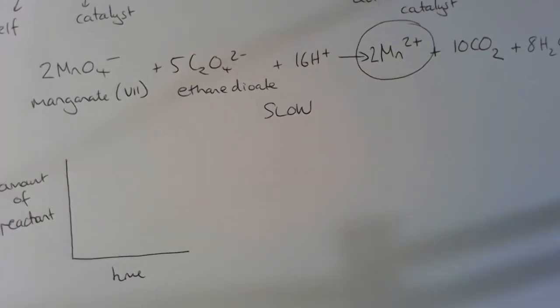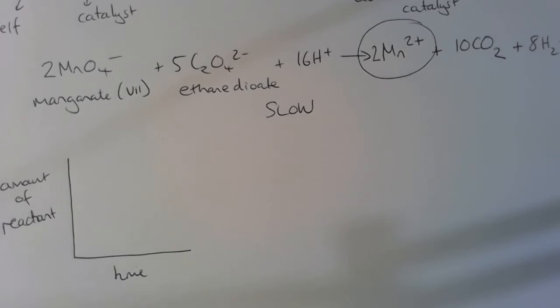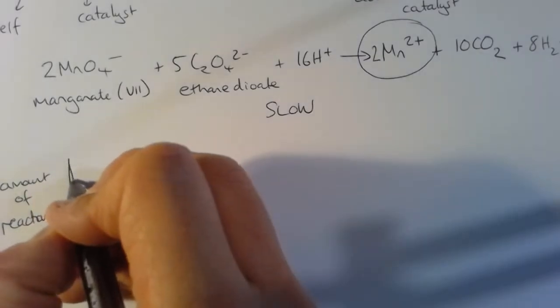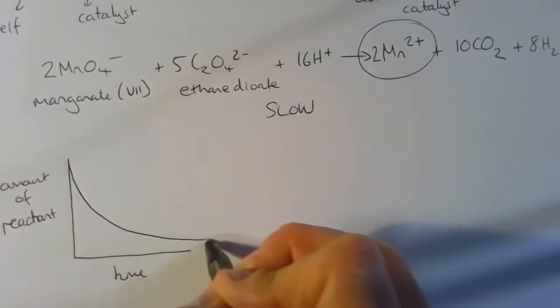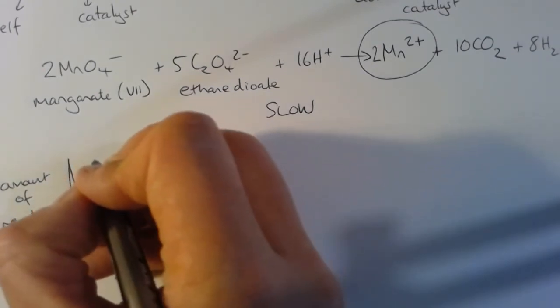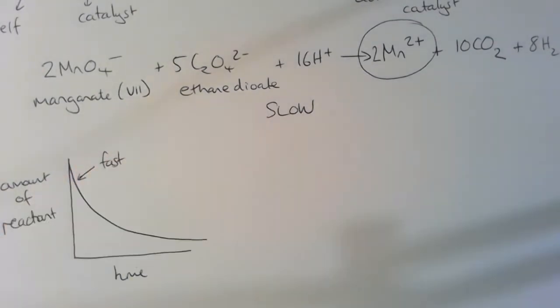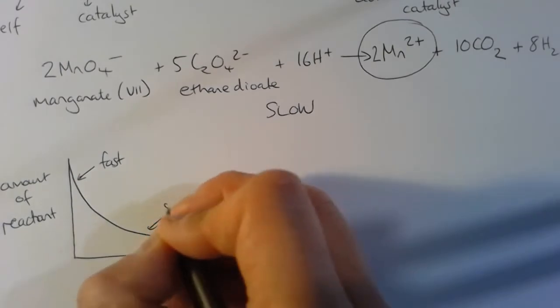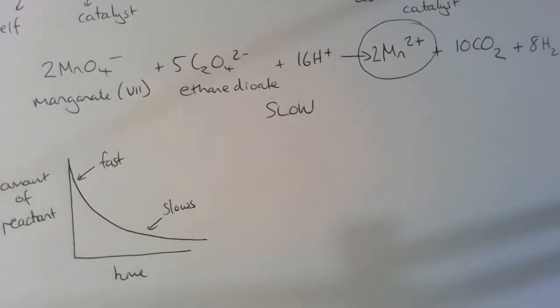So if we were to plot a graph of amount of reactant, which we could measure in different ways like concentration or moles, we would see a graph that looks like this. The gradient is steepest at the beginning of the reaction, so this is fast at the beginning, and then it slows as we run out of particles.